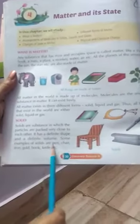Solid. Solid is a substance in which the particles are packed very close to each other. It has a definite shape and a definite volume. Some examples of solids are pen, chair, iron, gold, book, knife.